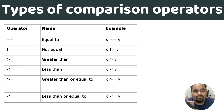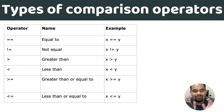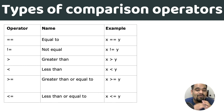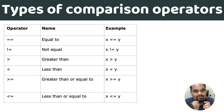Greater-than (>): if x is greater than y, you get 1; if x is smaller than y, you get 0. Less-than (<): if x is less than y, you get 1; if x is greater than y, you get 0. Greater-than-or-equal-to (>=): if x is greater than or equal to y, you get 1; otherwise, you get 0.